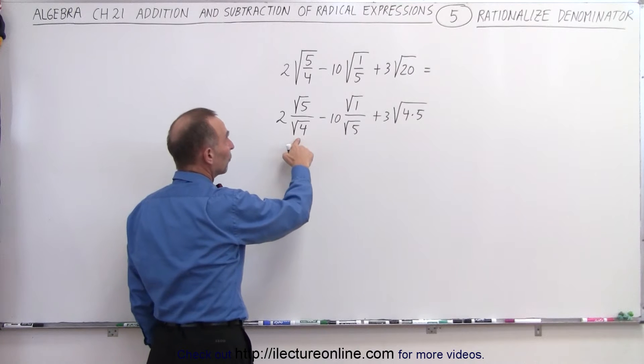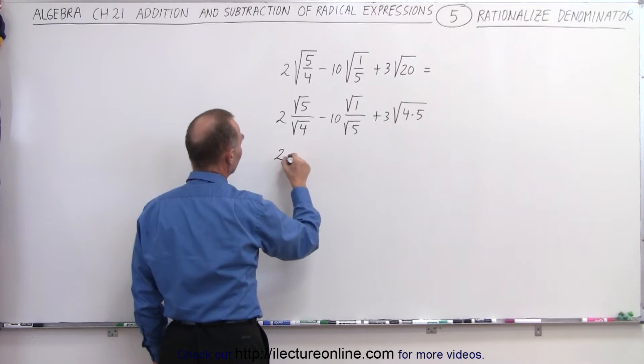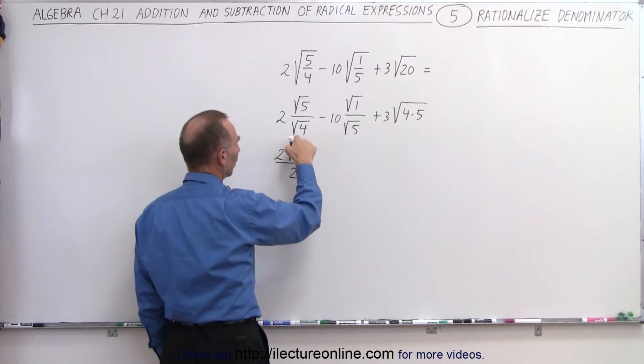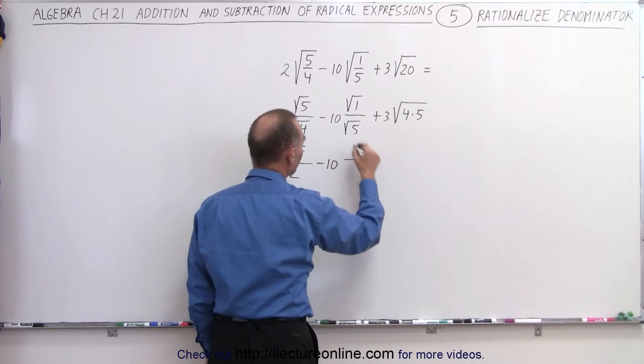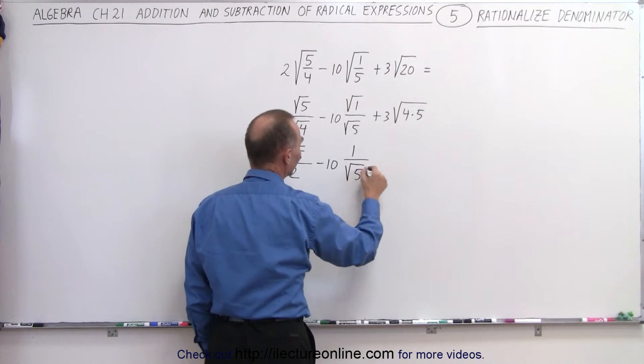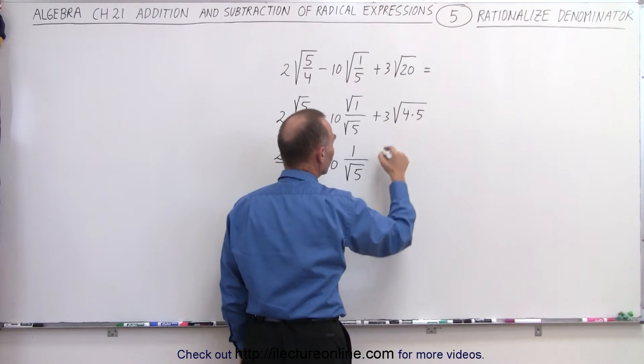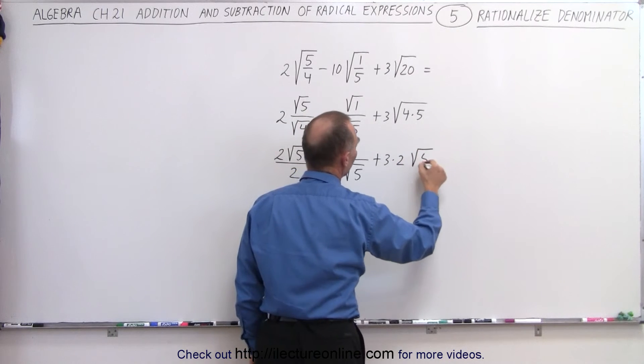Here you can also take the square root of 4, so let's go ahead and simplify those parts already. So here we have 2 times the square root of 5 divided by 2 because the square root of 4 is 2 minus 10 times the square root of 1 which is simply 1 divided by the square root of 5. And here we have the square root of 4, which is 2, so plus 3 times 2 times the square root of 5.